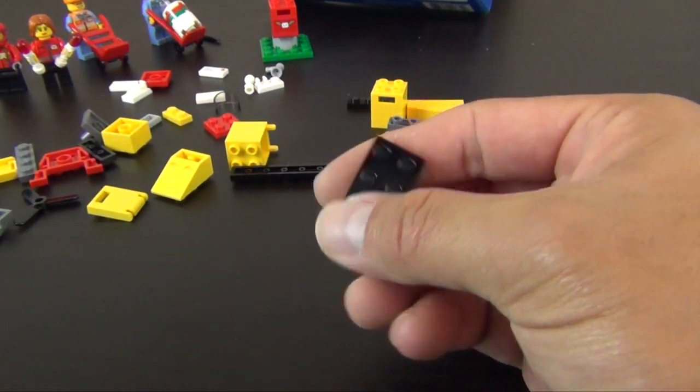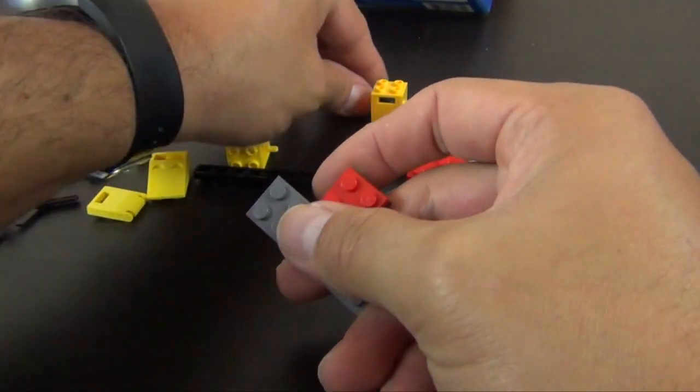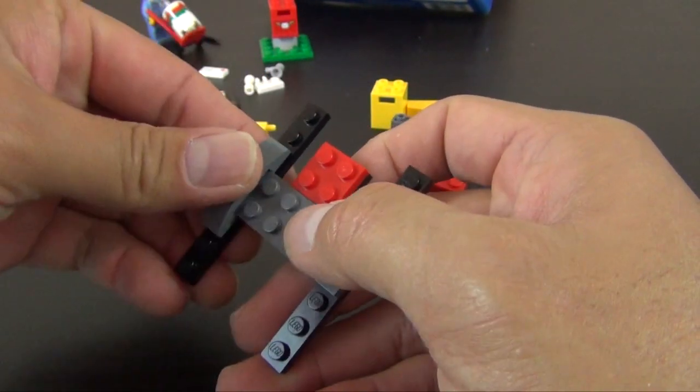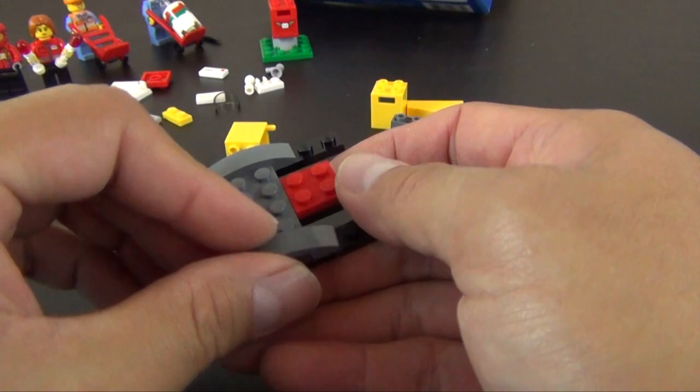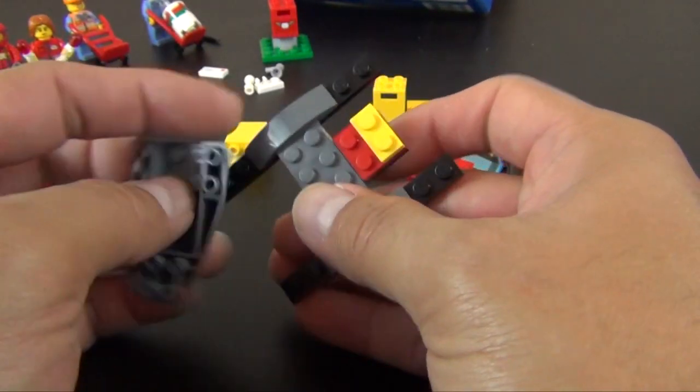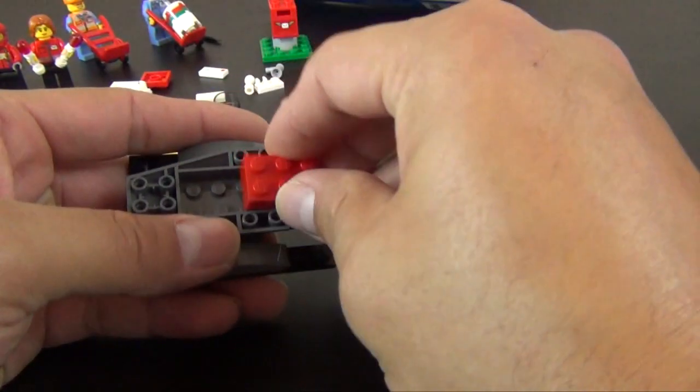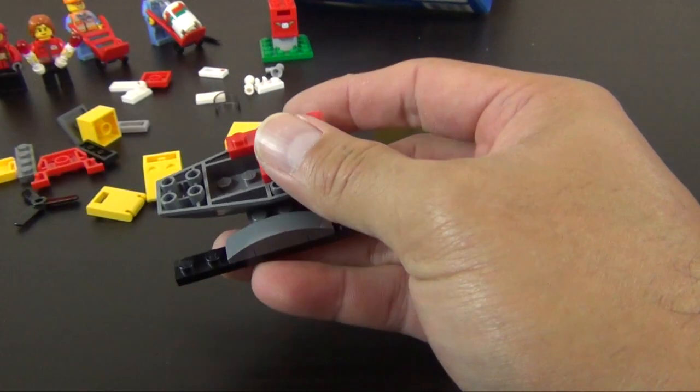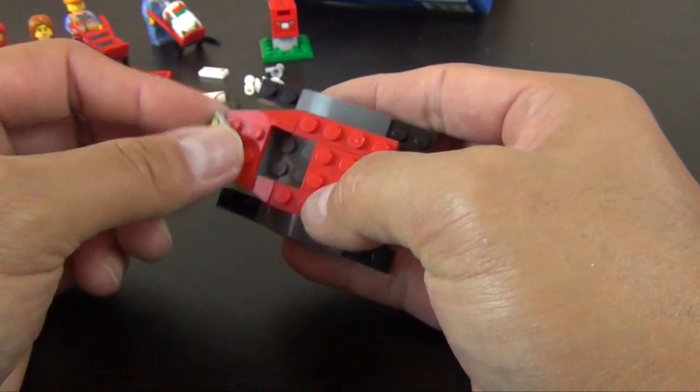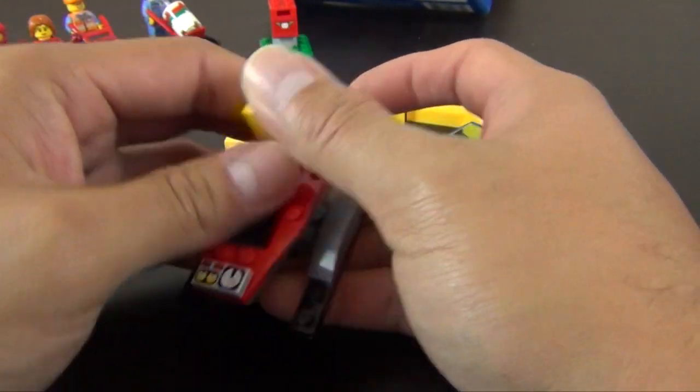Now, probably the biggest build on this set is the helicopter. Let's start with these plates. I have these curved plates that hold it together. Two by three brick. This is a printed control dial panel, or tile, I guess.